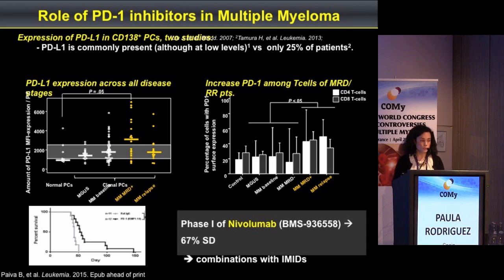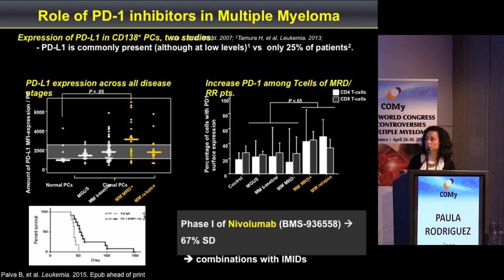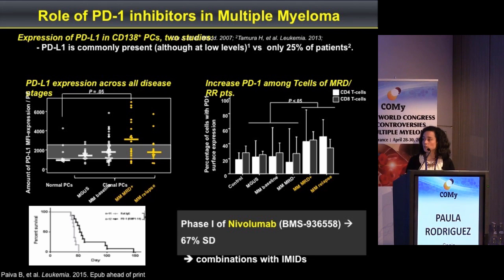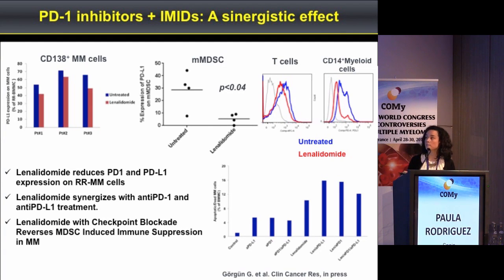What about PD-1 inhibition in multiple myeloma? PD-L1 expression is increased in clonal plasma cells throughout the disease, but expression levels are higher in multiple myeloma patients with MRD positivity and also at relapse. This is also true for levels of PD-1 on lymphocytes in these patients. In a mouse model using PD-1 blockade, survival was prolonged. However, results of nivolumab single agent in the same phase 1 trial showed only stabilization of disease, suggesting this treatment needs to be used in combination. In vitro data from Kenneth Anderson's group showed that lenalidomide reduces PD-1 and PD-L1 expression in relapsed/refractory multiple myeloma cells, with a clear synergistic effect of the combination.